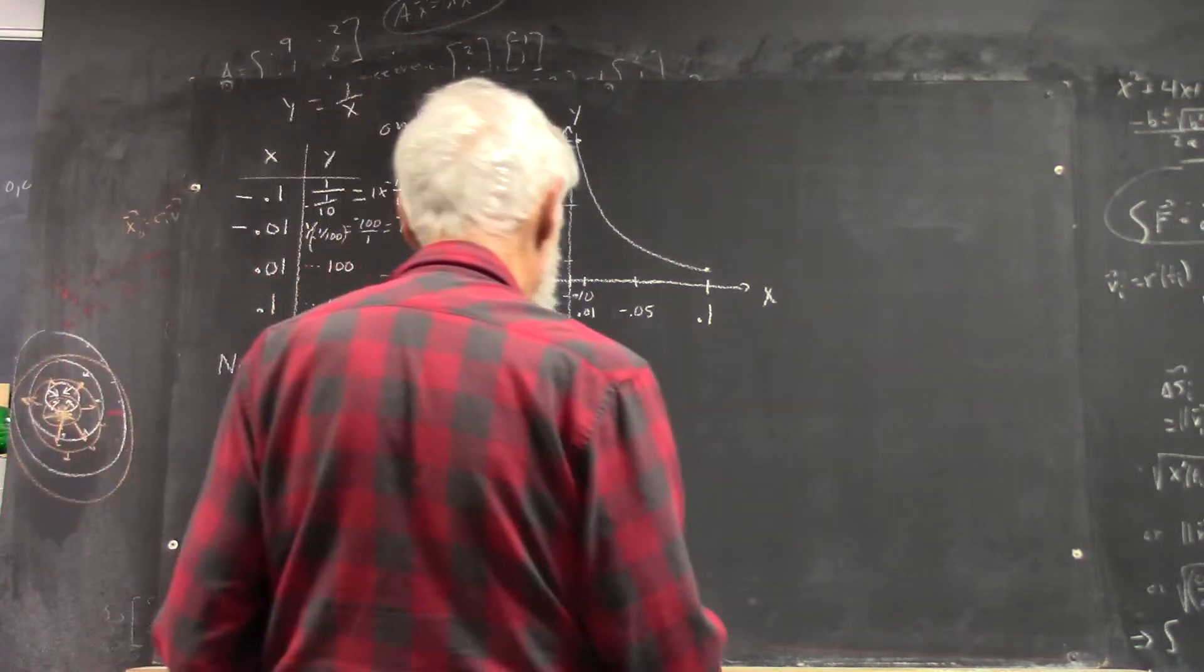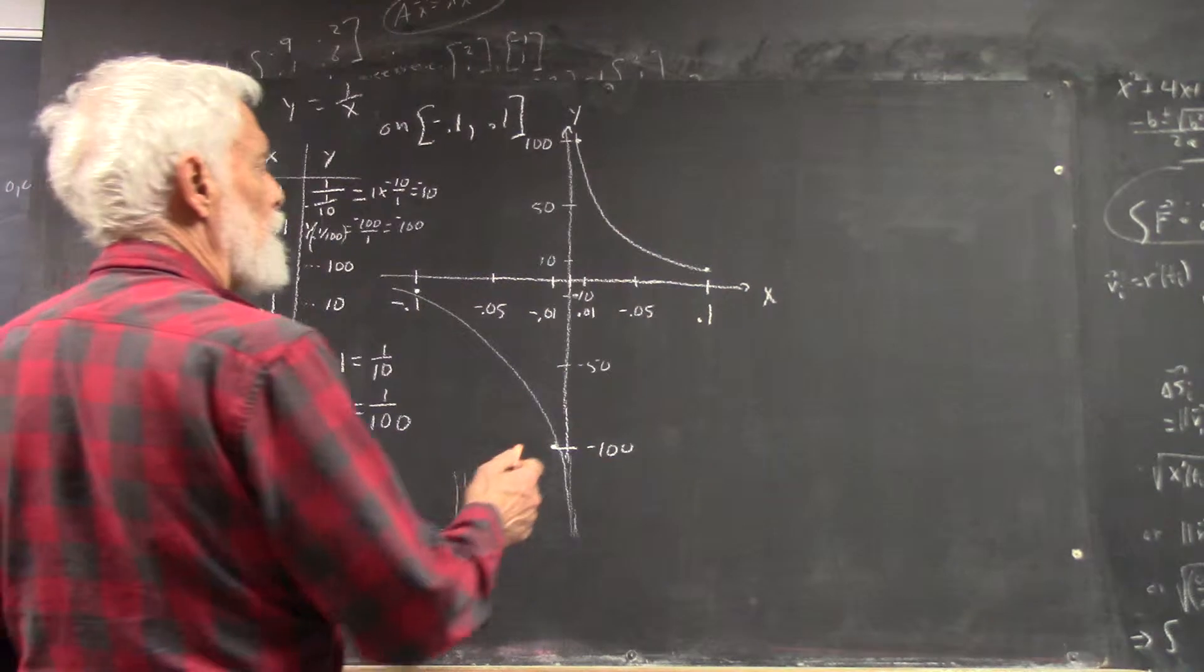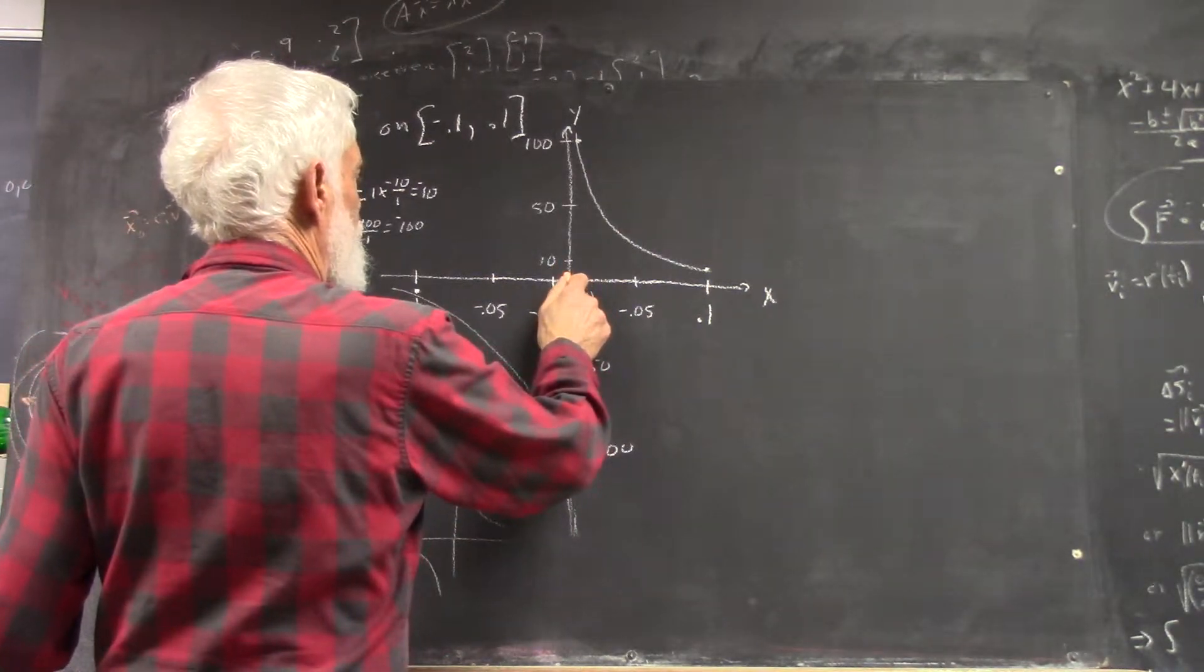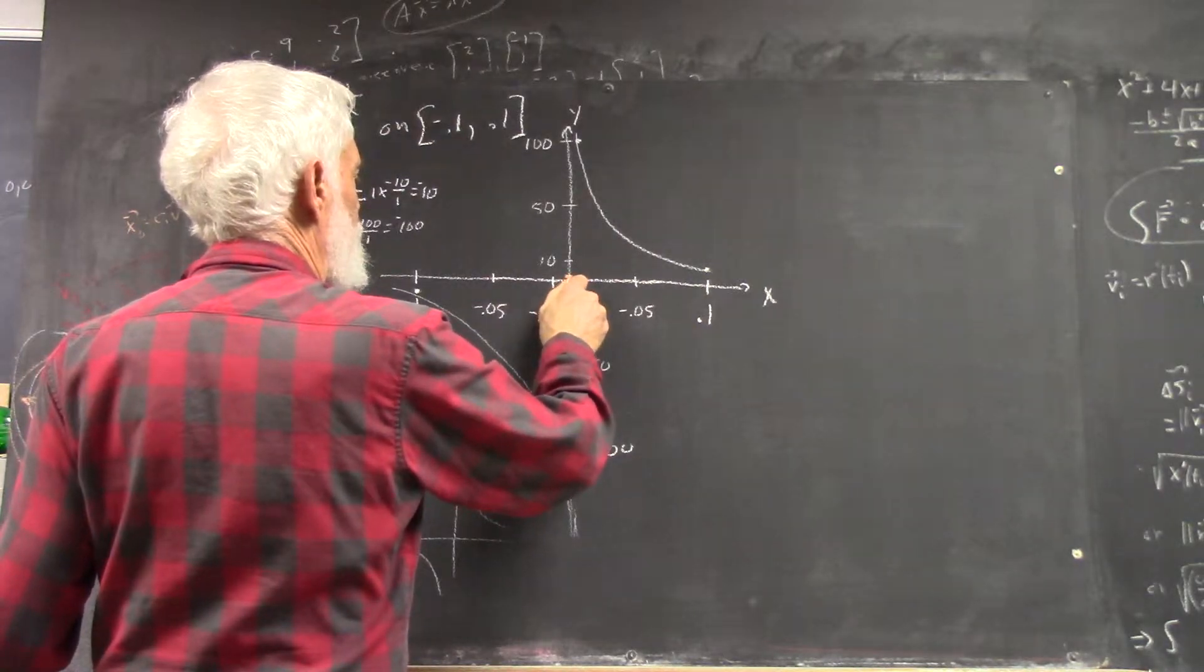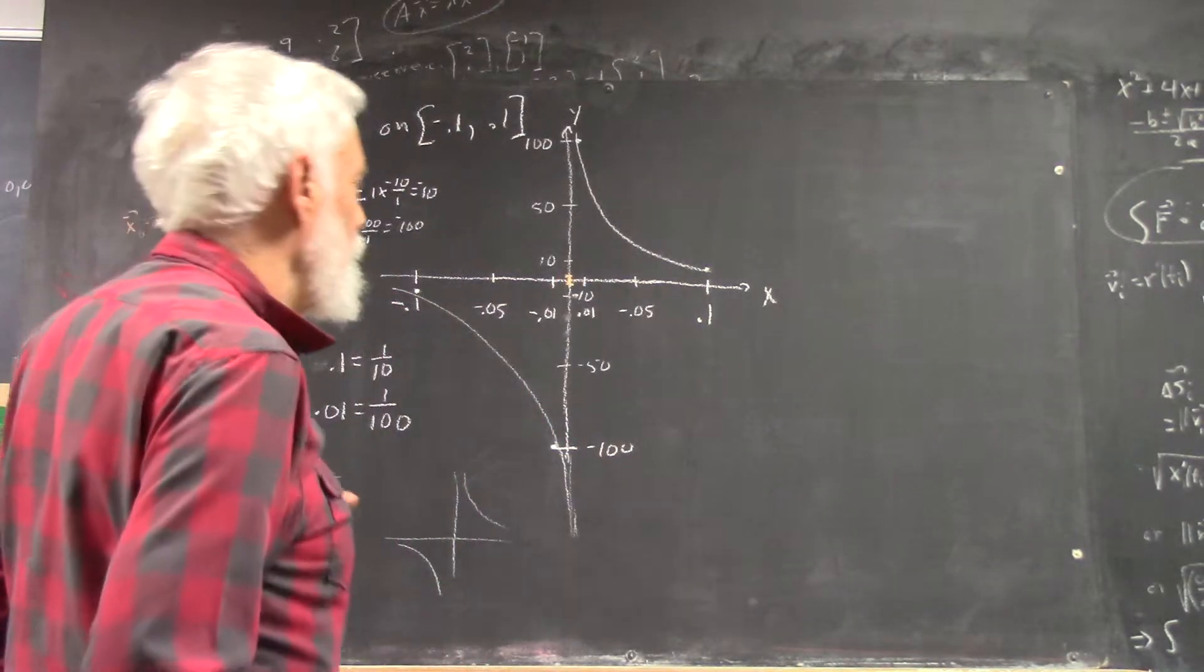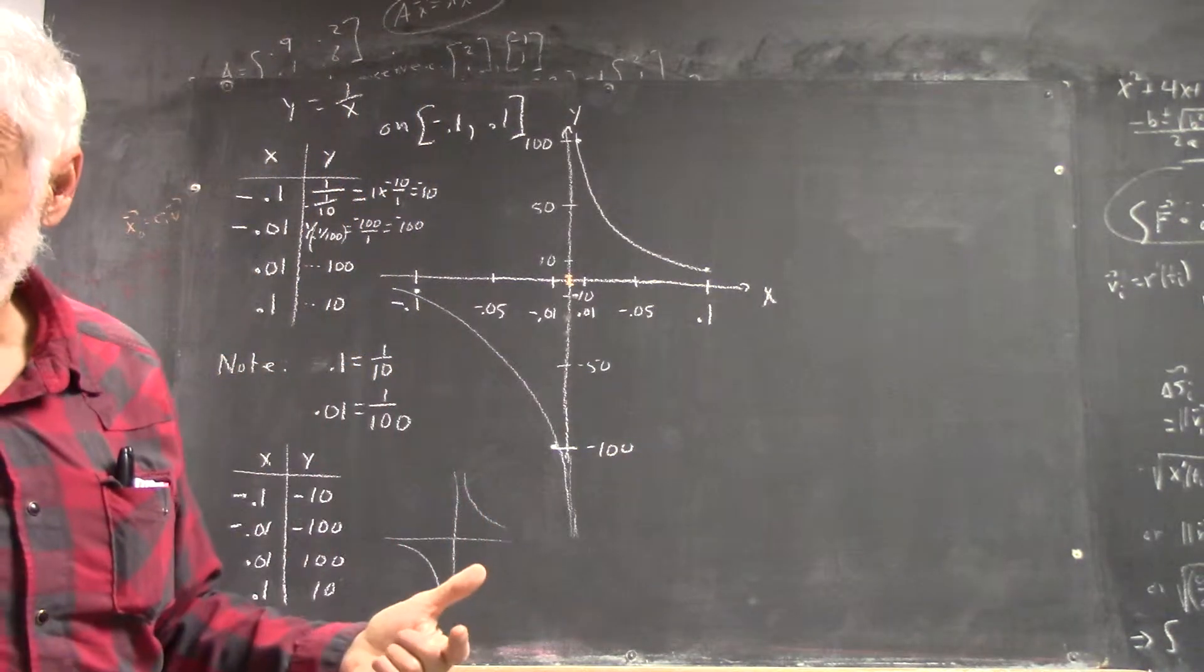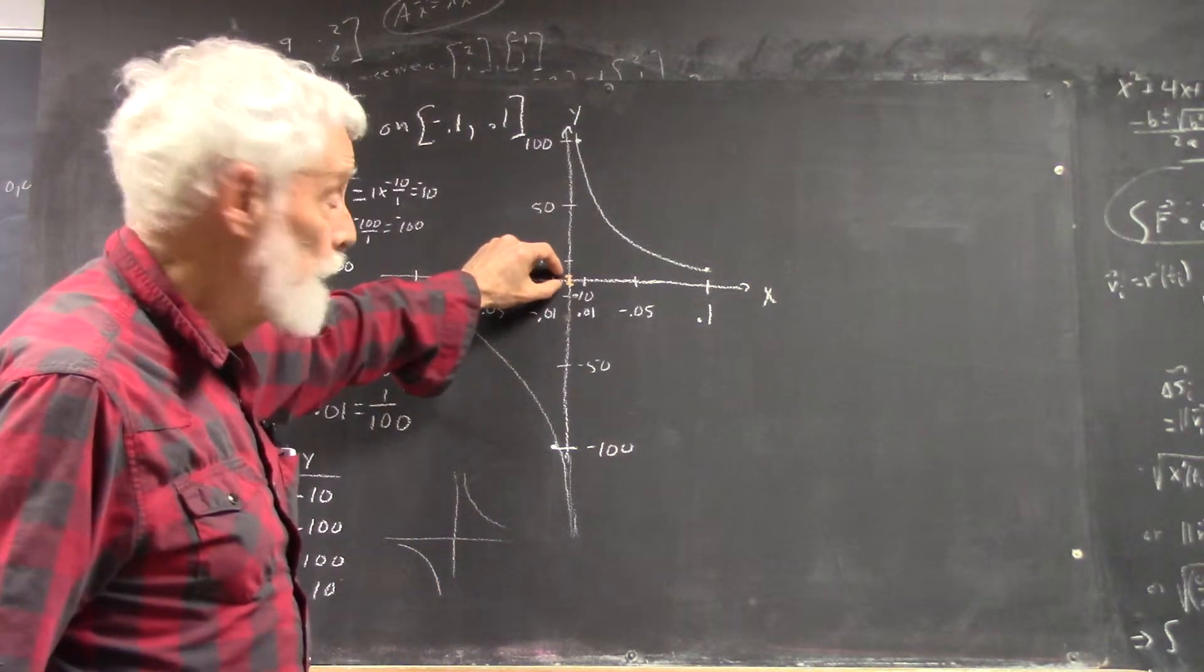So, our basic points graph, where's negative 2 and where's 2? Well, if this is negative 10 and this is 10, then 2 might be here and negative 2 might be here, right? So, our entire basic points graph would have y values between here and here.